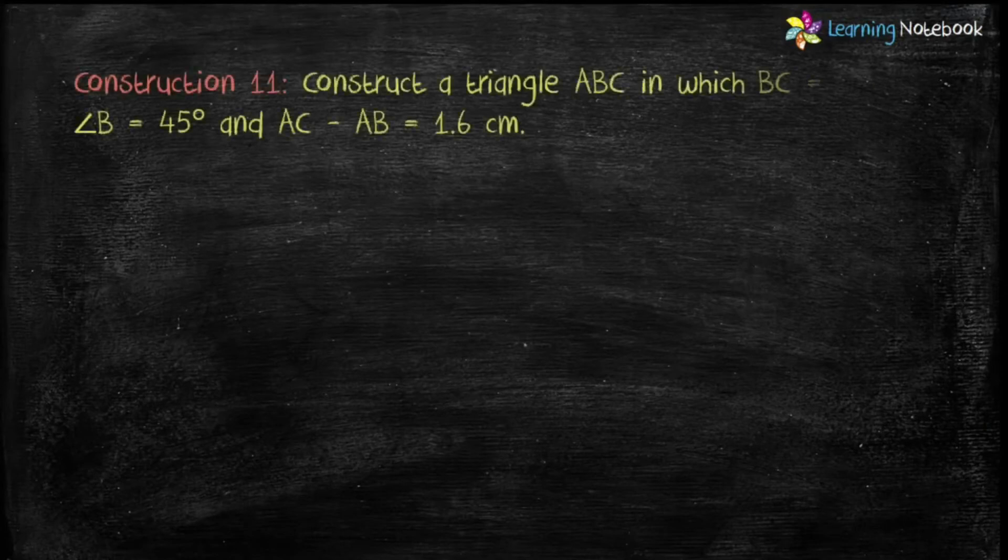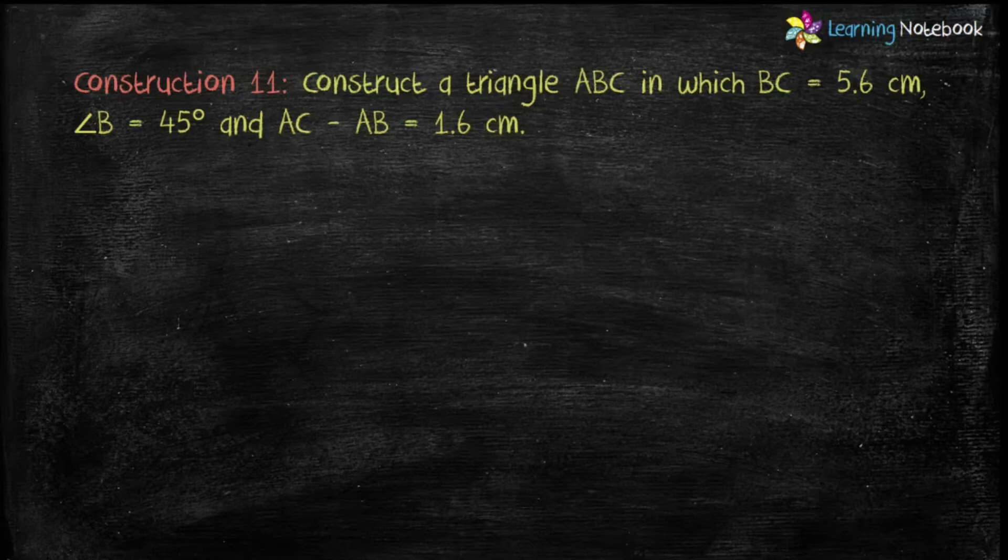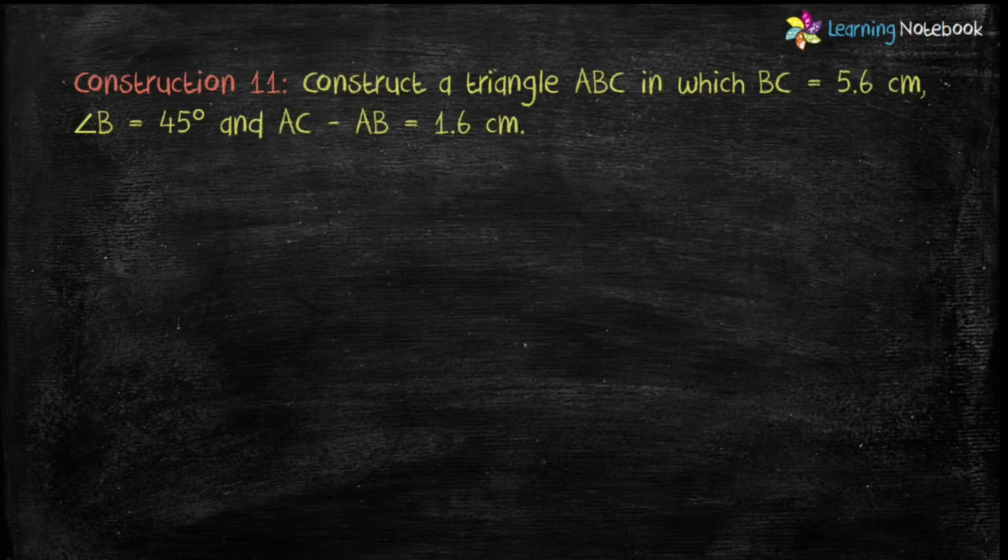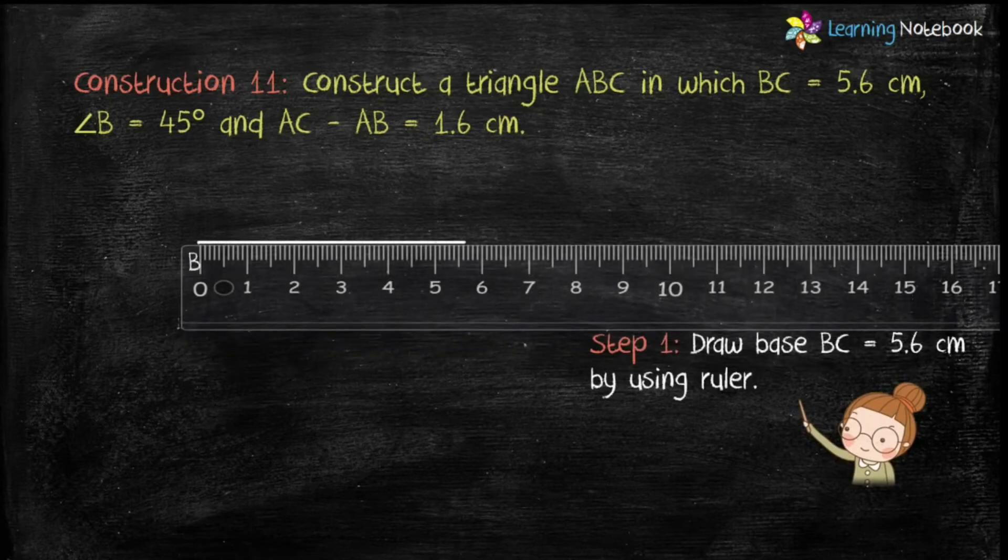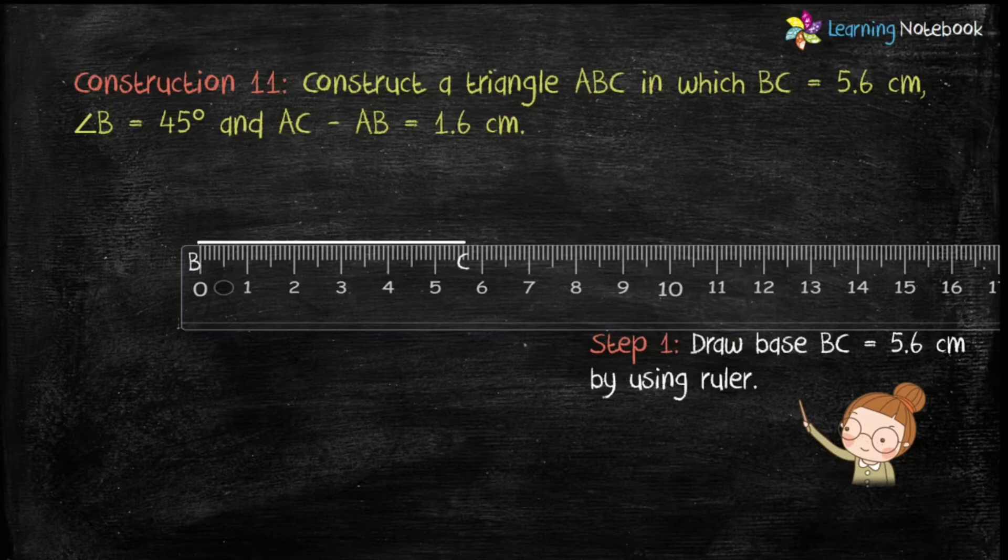So the question is: construct a triangle ABC in which BC equals to 5.6 cm, angle B equals to 45 degrees, and AC minus AB is 1.6 cm. So students let's start the construction. Step 1 is draw base BC equals to 5.6 cm by using a ruler.